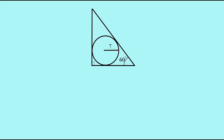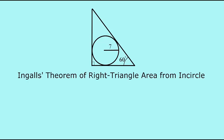In order to get the area of the triangle with the information given, we're going to use Ingalls' theorem of area of right triangle via incircle, which is r²(sec θ + tan θ)(cot θ + csc θ). Once we have the area, we'll be able to use another formula